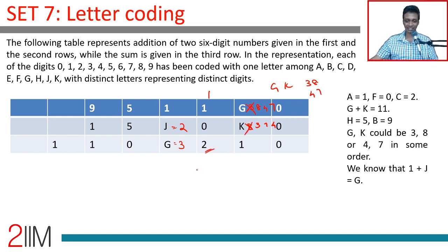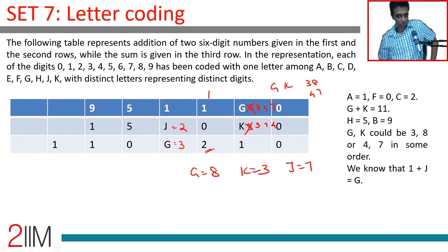If G were 8, suppose we say G is 8, then we can say K is 3. And we can say J is 7. Nothing is wrong here. 8, 3, 7 works.